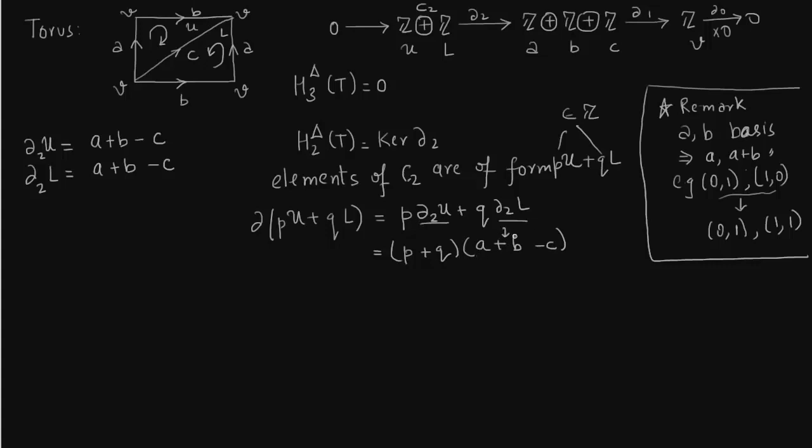Okay, very clear. So the kernel will be also generated by a + b - c. The kernel will be generated if p is equal to -q. So you do have a kernel, and the kernel is generated by a + b - c, precisely when p equals -q.